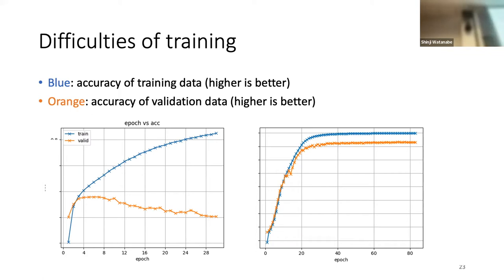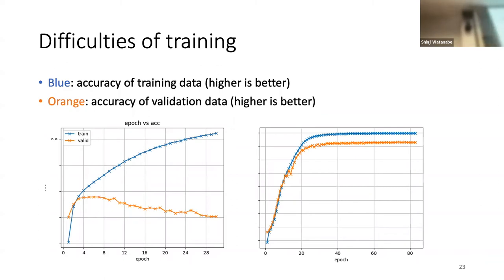Looking at these two training curve patterns — left and right — the question is which one shows training working well and which one is failing.